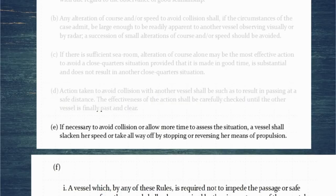If necessary to avoid collision, or allow more time to assess the situation, a vessel shall slacken her speed, or take all the way off, by stopping or reversing her means of propulsion. This makes sense — if you need more time, just stop your vessel, stop running ahead, give yourself more time to assess the situation or avoid the collision.